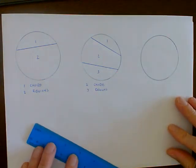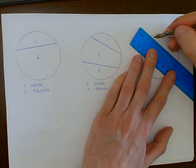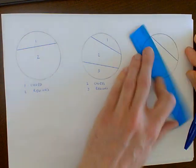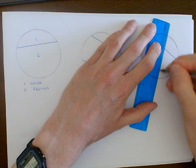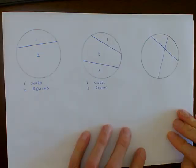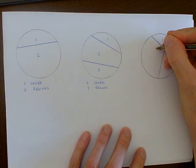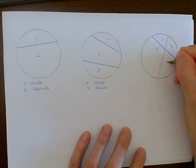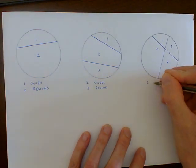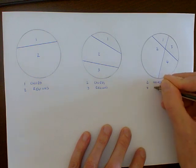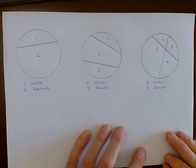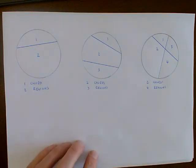But I think I can do better than that with two chords. I could actually draw a chord here and here and chop my circle into one, two, three, four regions. So two chords could make four regions, and I'm very confident that that is the maximum number of regions that I could get with two chords.